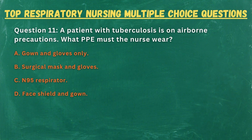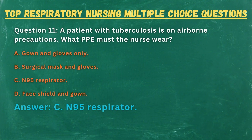Question 11. A patient with tuberculosis is on airborne precautions. What PPE must the nurse wear? A. Gown and gloves only. B. Surgical mask and gloves. C. N95 respirator. D. Face shield and gown. Answer: C. N95 respirator.